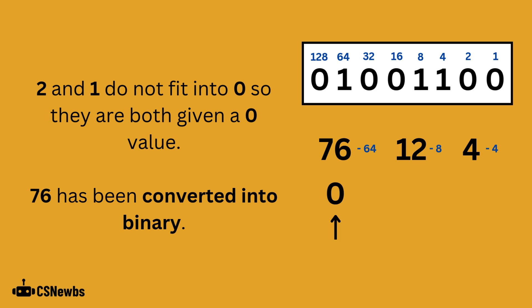Both 2 and 1 do not fit into 0, so a 0 is written beneath the two place values. 76 has now been converted into binary.